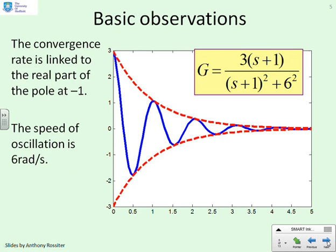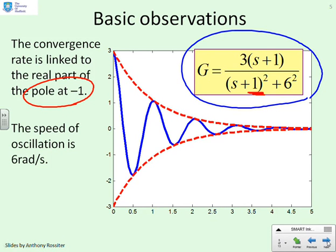Basic observations then. We've given a transfer function. There it is. G equals 3 s plus 1 over s plus 1 squared plus 6 squared. Now what you can see very clearly is the real part of the root is minus 1. And I've marked that over here. And therefore the solution contains an e to the minus t. Now e to the minus t is this red line here. It's modulated by 3 because you'll see there was a 3 in the numerator. That's why it starts from 3.